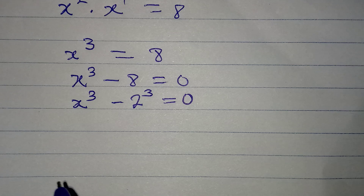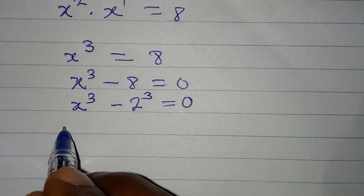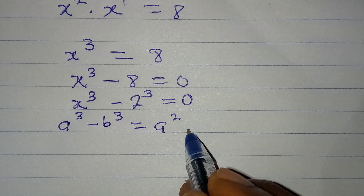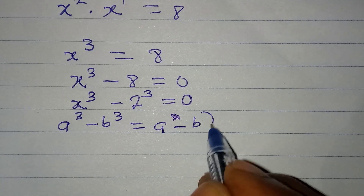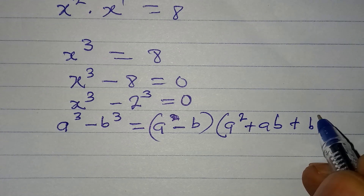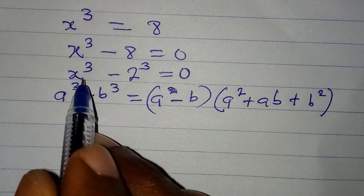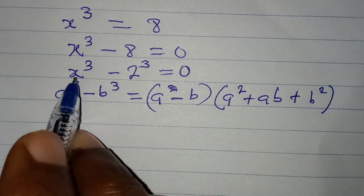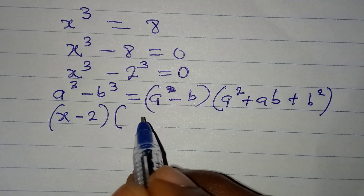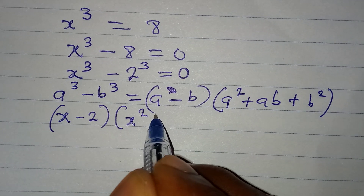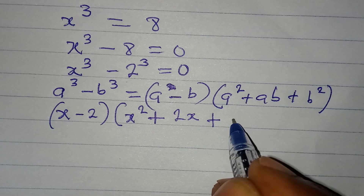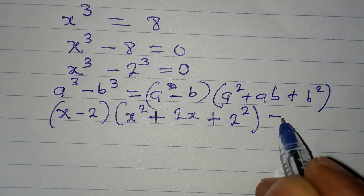Now from here, let's apply the standard that if you have a to the power of 3 minus b to the power of 3, this is the same thing as a minus b into a squared plus ab plus b squared. So I'm going to apply this standard: in place of a minus b, I'll have x minus 2. Then in place of a squared, I have x squared; ab becomes 2 times x, that is 2x; then plus b squared, that will be 2 squared. And this is equal to 0.